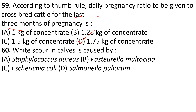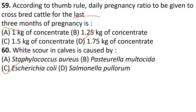White scour in calves is caused by sudden appearance of high fever, shifting lameness, enlargement of peripheral lymph nodes, and reduction in milk yield — caused by Rota virus.